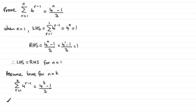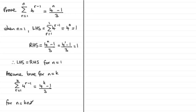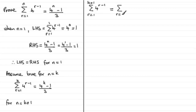So we now check it out for n equaling k plus 1. For n equals k plus 1, we would have our series: sigma of 4 to the power r minus 1, r going from 1 to k plus 1. That's going to equal the sum of the first k terms — r going from 1 to k of 4 to the power r minus 1 — plus the last term, the (k+1)th term, which is 4 to the power k plus 1 minus 1, in other words simply 4 to the power k.